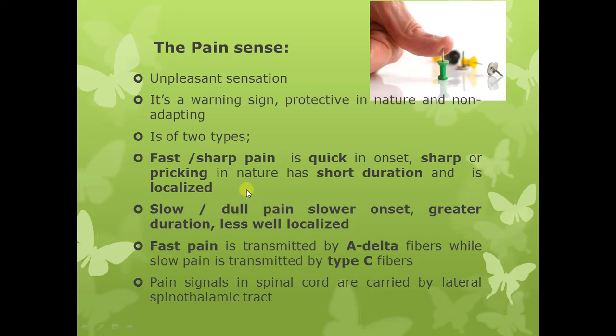The nerve fibers which carry the sharp pain or fast pain are type A delta fibers. These carry the fast pain from the receptors to the spinal cord. Slow pain is transmitted by type C fibers. In the spinal cord, pain signals are carried in the lateral spinothalamic tract, which is an ascending sensory pathway that carries the sensation of pain to the central nervous system.